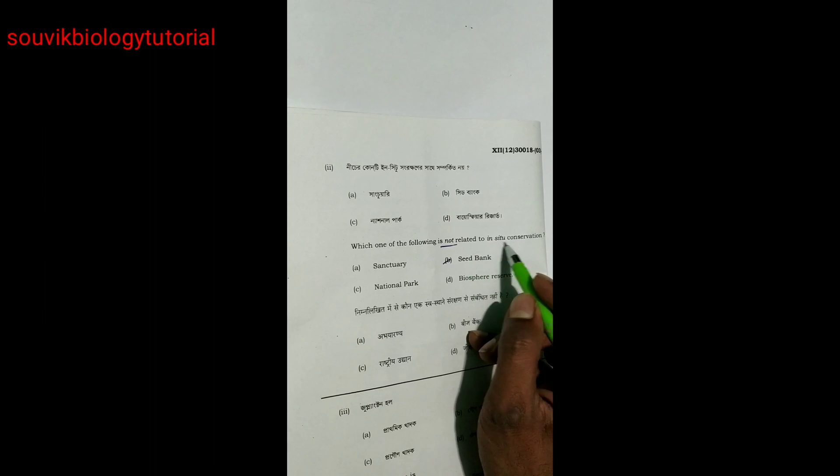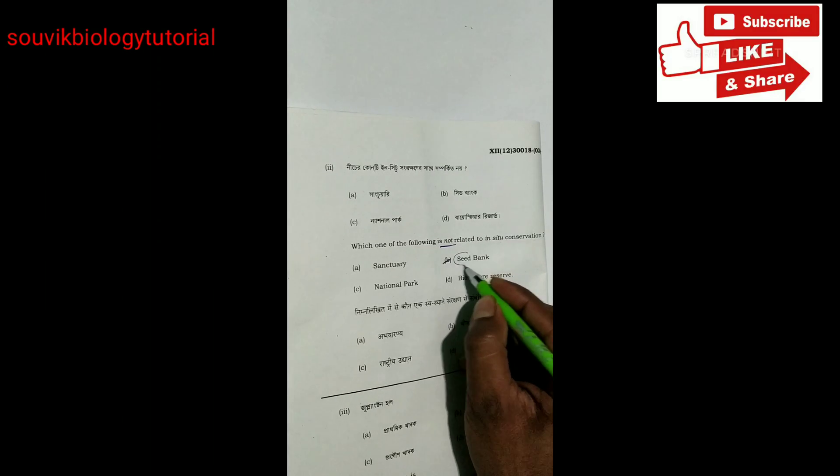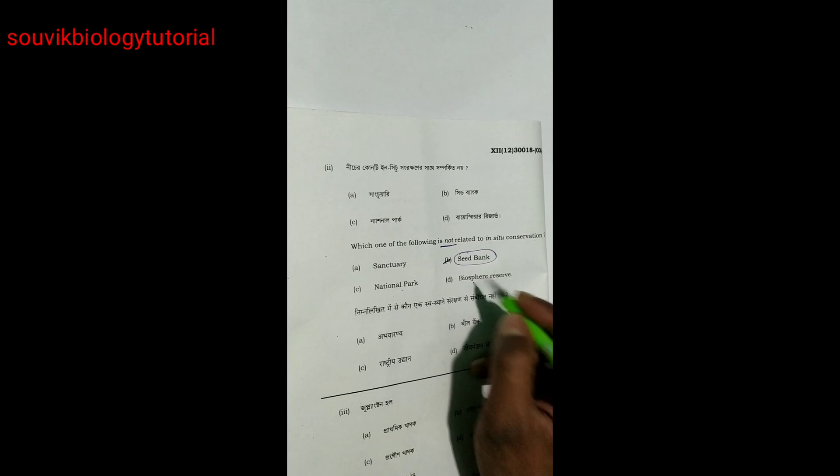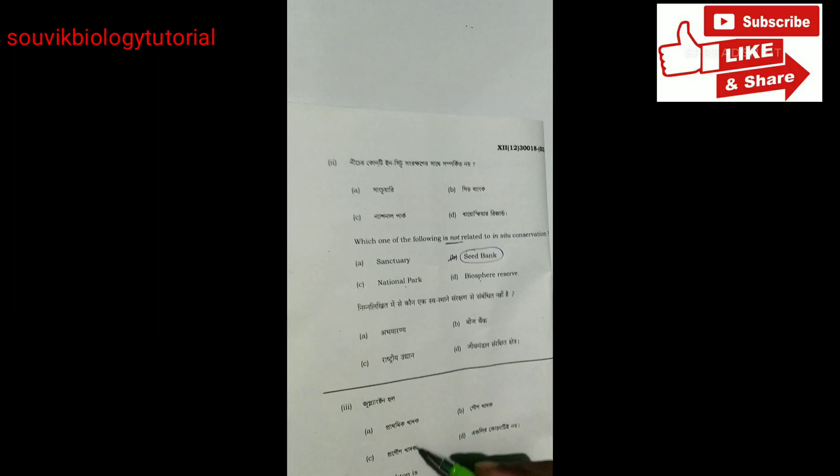Which one of the following is not related to in-situ conservation? Right answer is seed bank because sanctuary, wildlife sanctuary, national park, biosphere reserve all are in in-situ conservation. Only seed bank is not included in in-situ conservation.